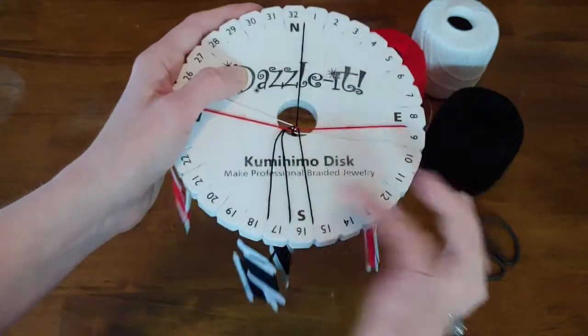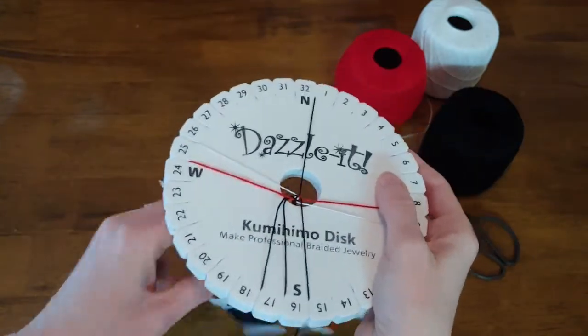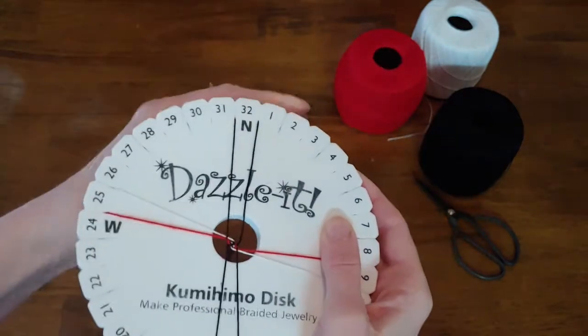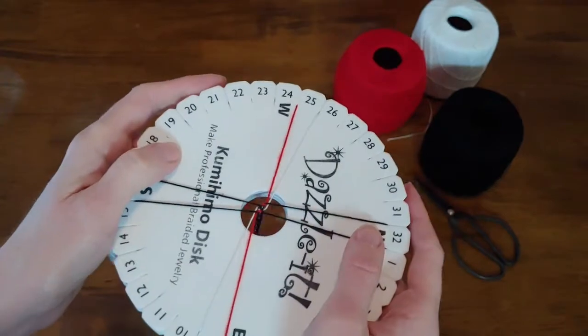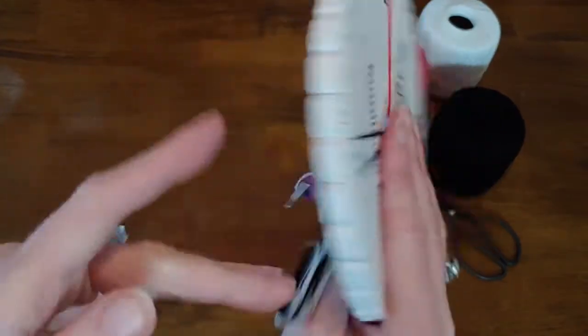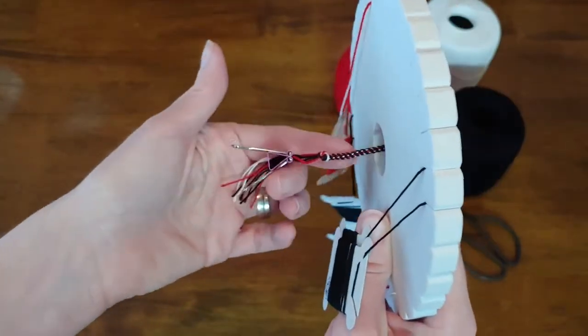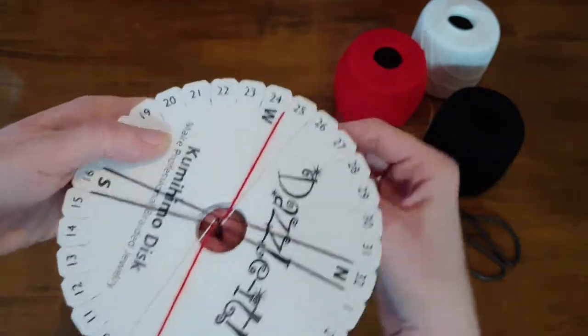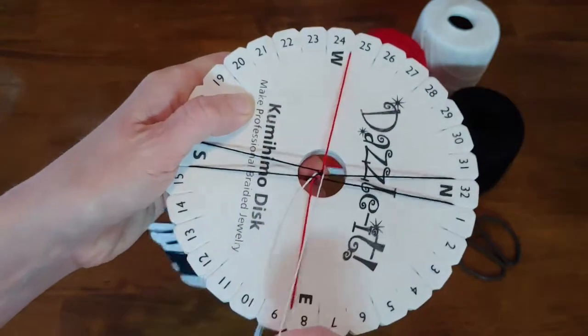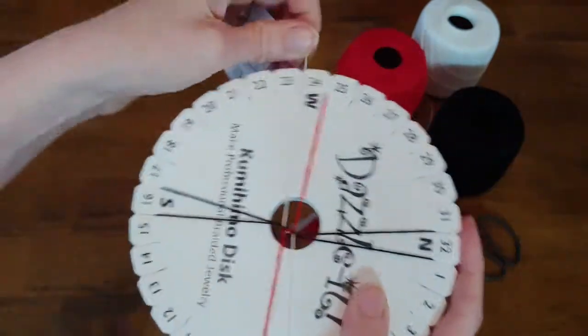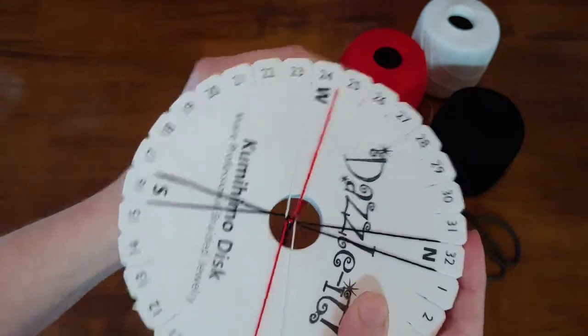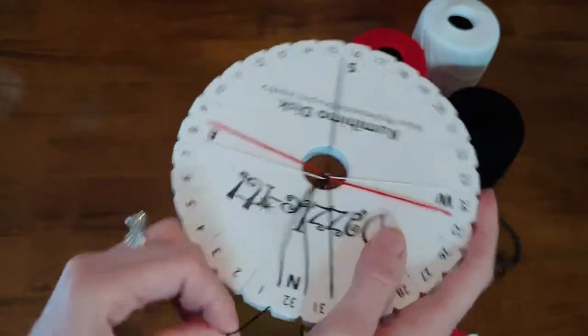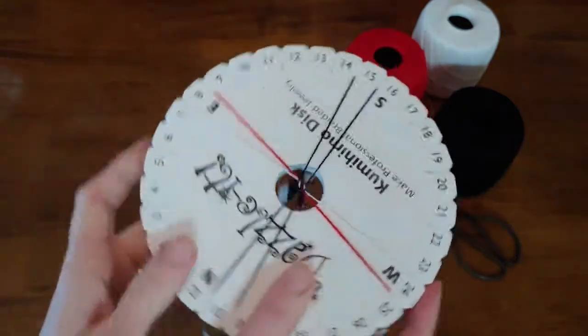And now you just continue doing this with the top right going down, and the bottom left going up, pulling your strings tight, and then doing a quarter turn. And as you continue to do this, you'll see that the braid will begin to appear on the underneath side. And you just continue doing your braid until the braid is the desired length that you would like for your bracelet or your necklace.